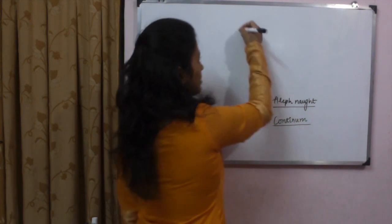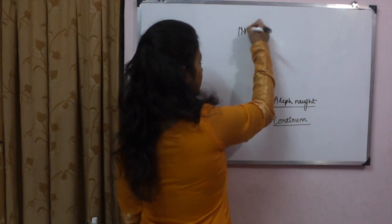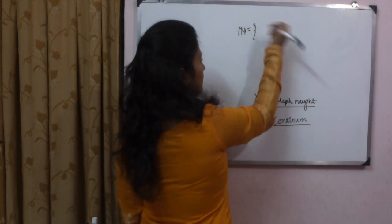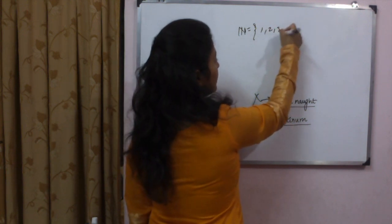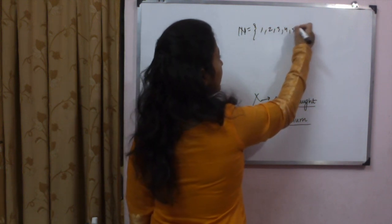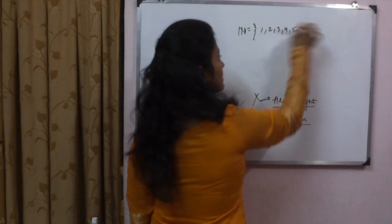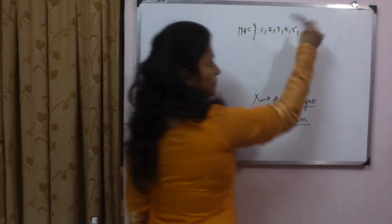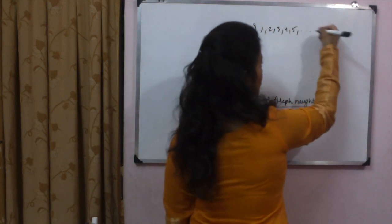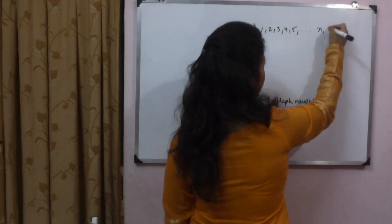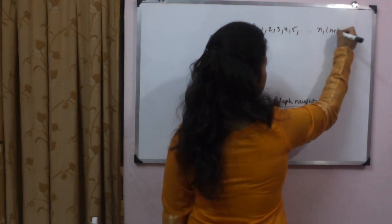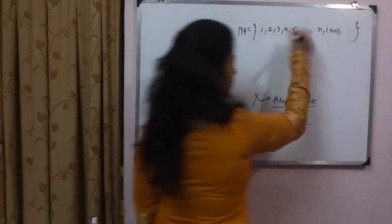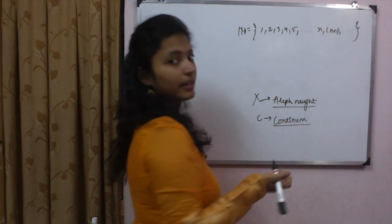Now let's see which cardinality we use for which set. For natural numbers — 1, 2, 3, 4, 5, and so on — we use the cardinality denoted by ℵ₀, which we call Aleph-null.